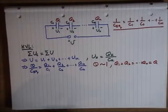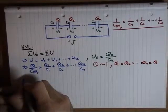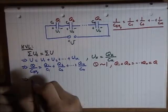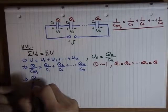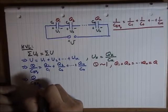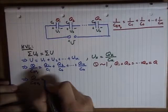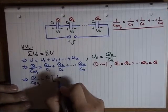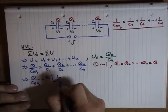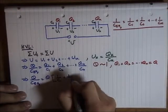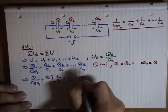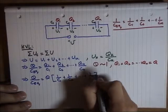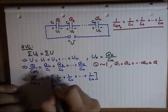So, again, we substitute that to this one and factorize at the same time. Q over C equivalent is equal to Q times 1 over C1 plus 1 over C2 plus 1 over Cn.